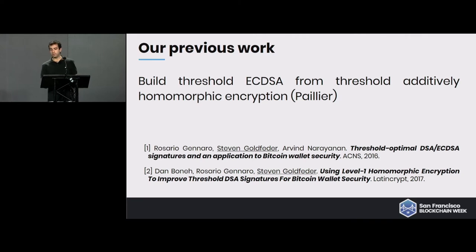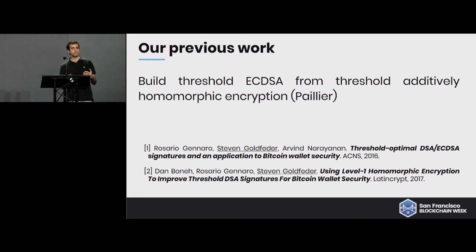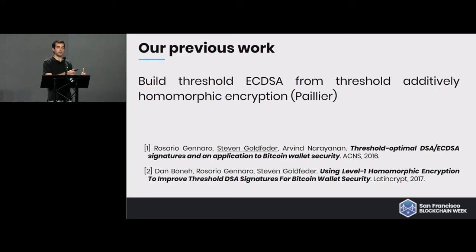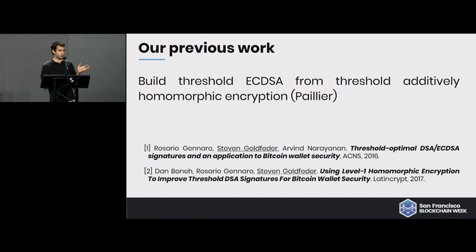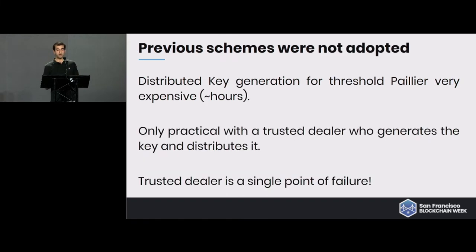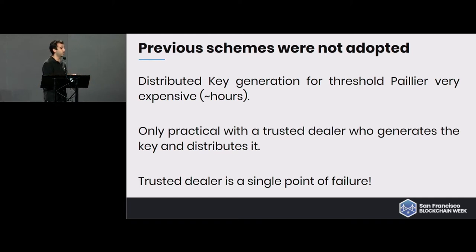In previous work, together with Rosario Gennaro, Arvind Narayanan, and Dan Boneh, I built a threshold ECDSA signature scheme using threshold additively homomorphic encryption — Paillier encryption. The idea is you take an encryption scheme with properties that allow you to add and multiply numbers into ciphertexts. Everyone takes their shares, creates an encryption of a signature, and then uses a distributed threshold decryption protocol to decrypt that signature. The issue is: while we know how to do threshold decryption, we don't really know how to do distributed key generation for threshold Paillier very efficiently — in order for this to work, every party needs a share of the Paillier key.